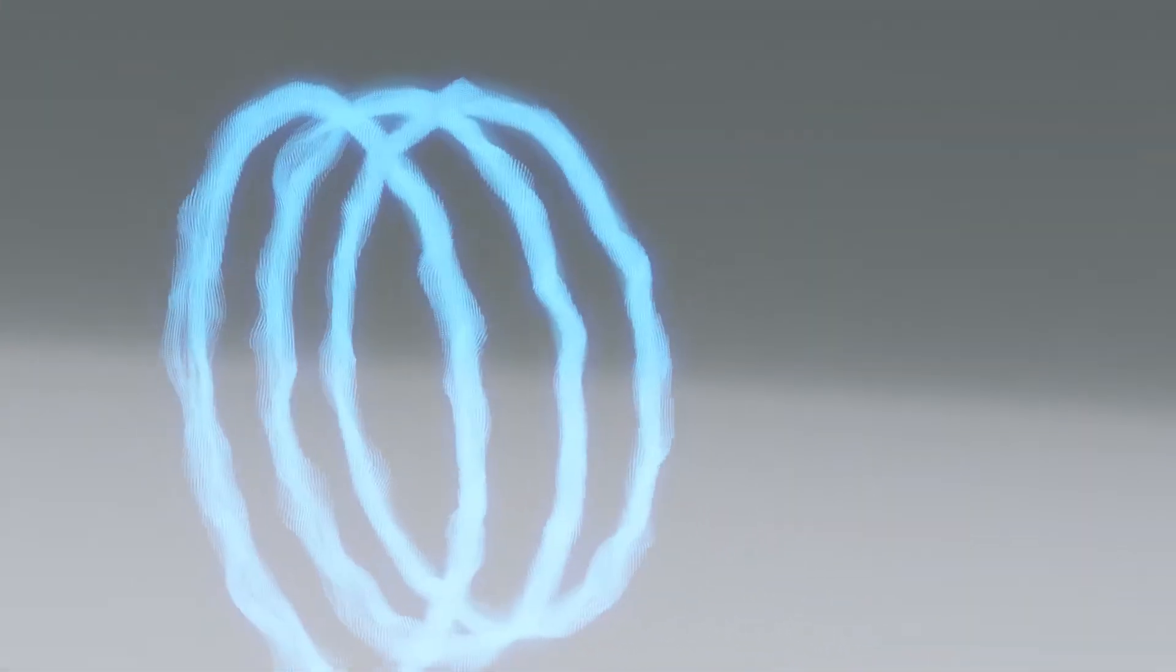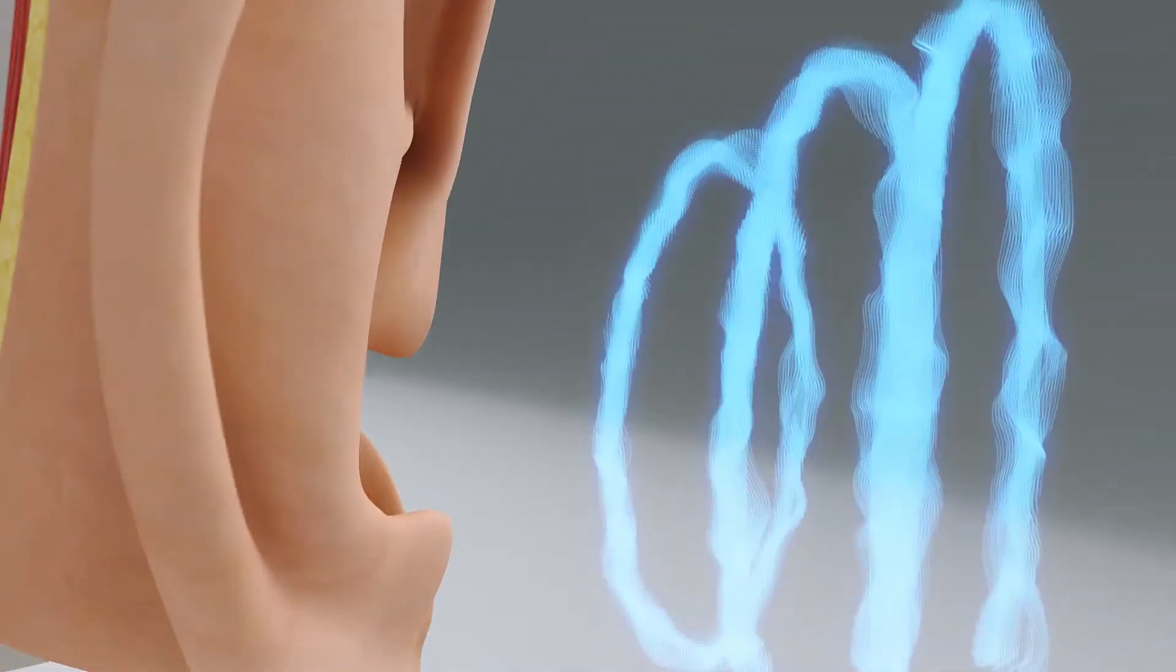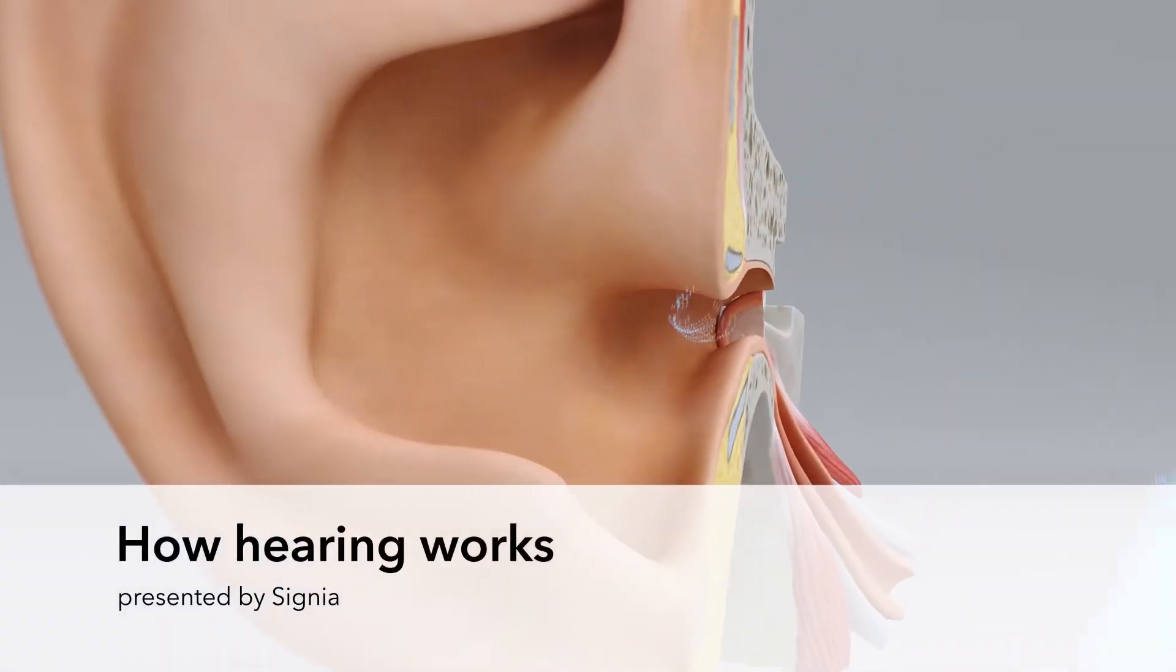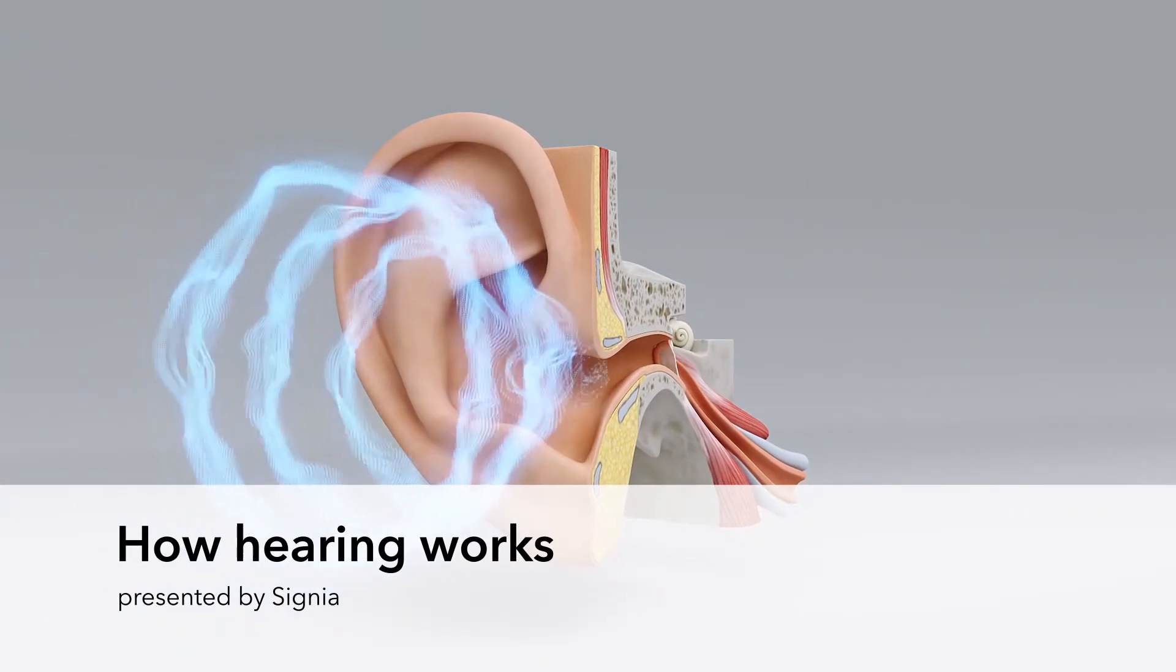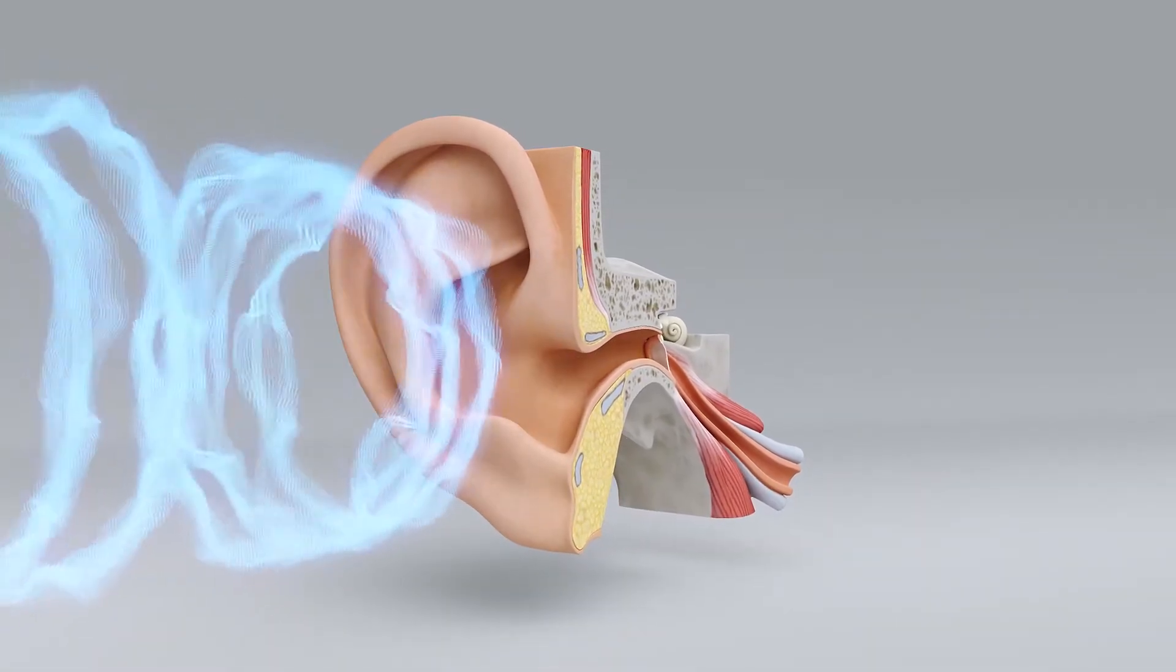Our world is full of infinite sounds, but how do we actually perceive them? Sounds are collected by the outer ear, which consists of the auricle and the external auditory canal.